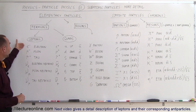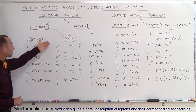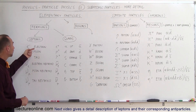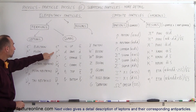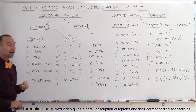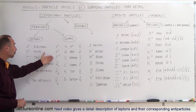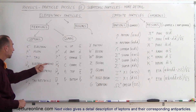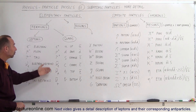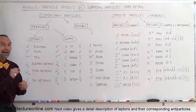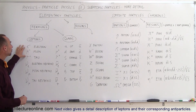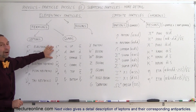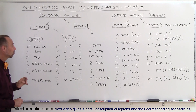For every one of the six leptons, there are six anti-leptons. So instead of an electron, we have the positive electron or positron; we have the positive muon and the positive tau. We also have the three anti-neutrinos — electron, muon, and tau anti-neutrinos. They are indicated by putting a little line on top, which means anti. In the case of a negatively charged lepton, the anti-particles are the positively charged positron, positive muon, and positive tau.